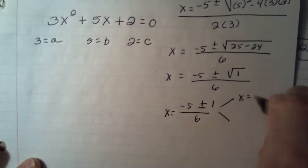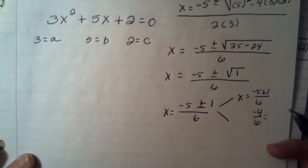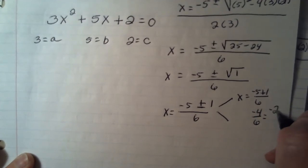I have x equals negative 5 plus 1 over 6. Well, when I simplify that, I get negative 4 over 6, which then reduces down to negative 2 thirds.